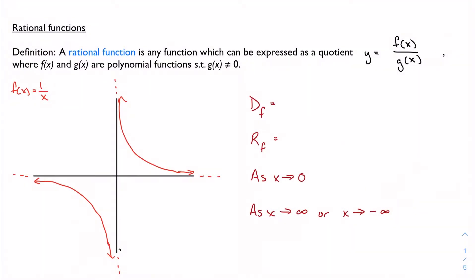Moving on to rational functions, you might remember from Algebra 2 that a rational function is any function which can be expressed as a quotient of functions, specifically a quotient of polynomial functions. Since I'm dividing, my denominator g(x) cannot be 0.